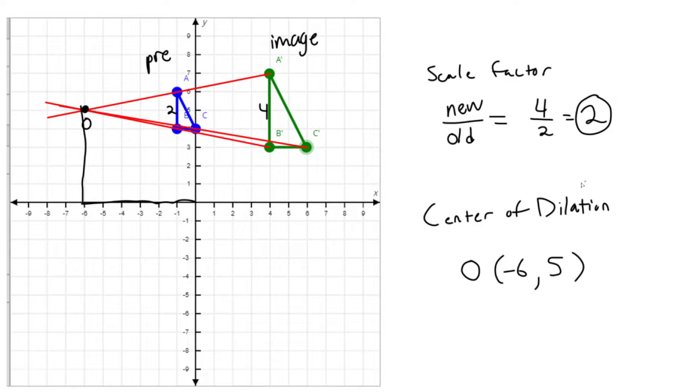So I was able to find out the center of dilation by connecting the corresponding points using lines. Remember, these lines have to be straight and they have to converge up to one point. We're going to connect those points based on corresponding points. That's the main part. We need to be finding corresponding points. So in that case, our center of dilation is negative 6, 5.